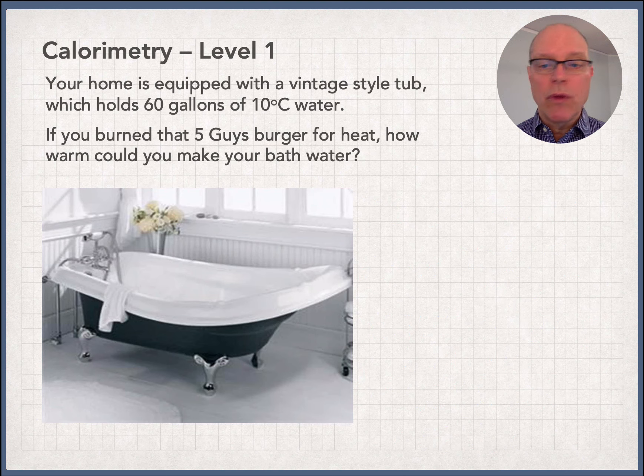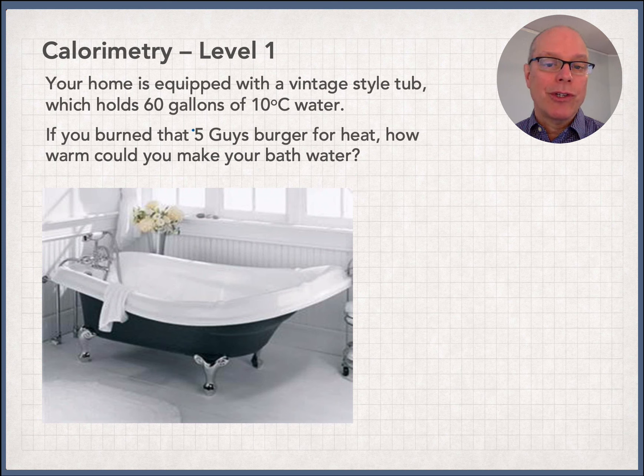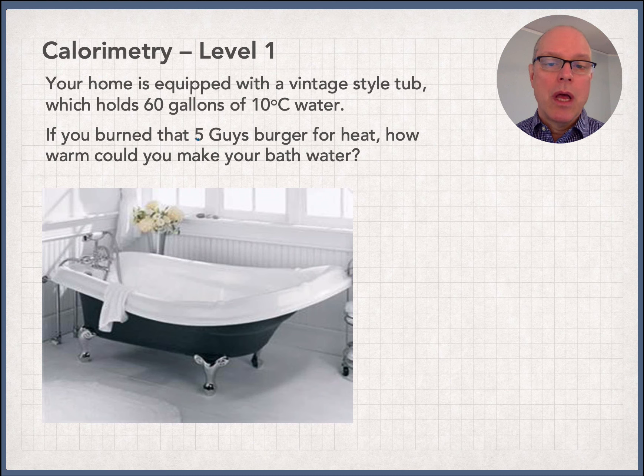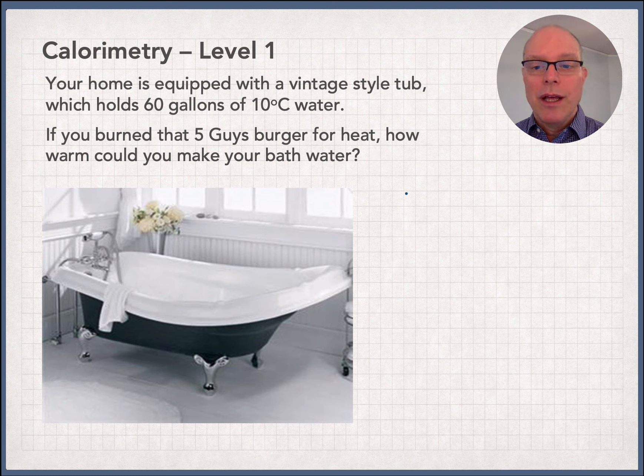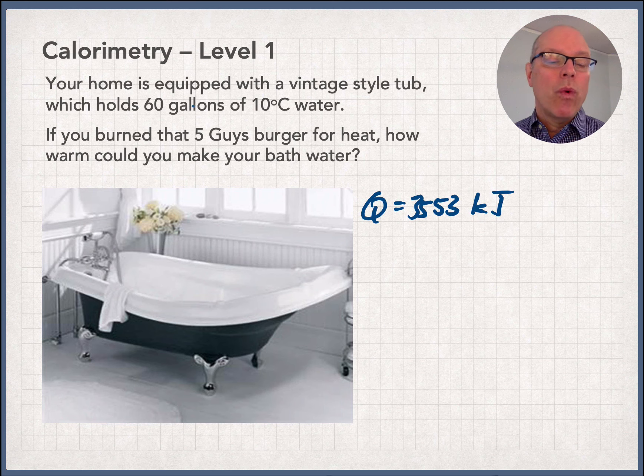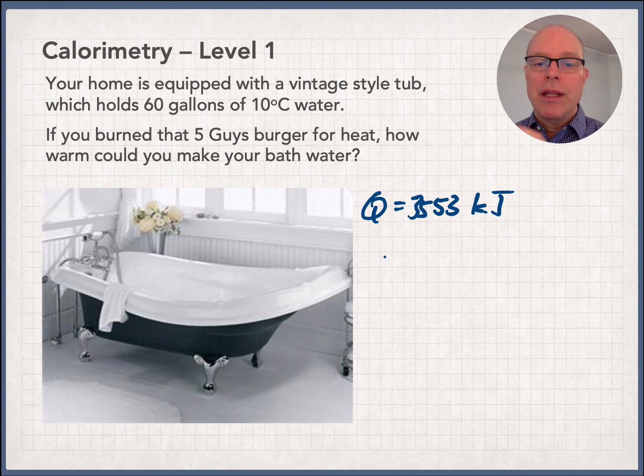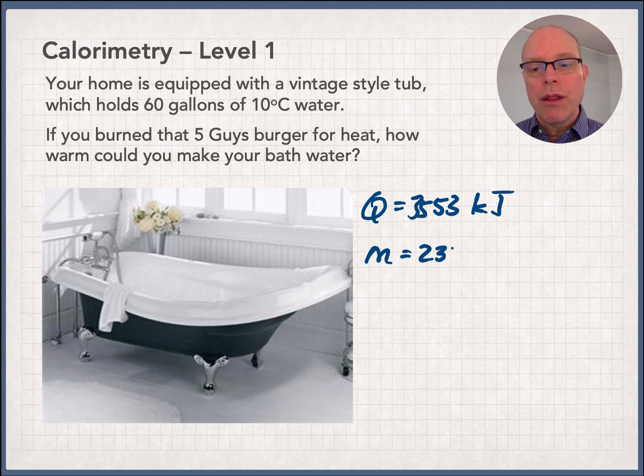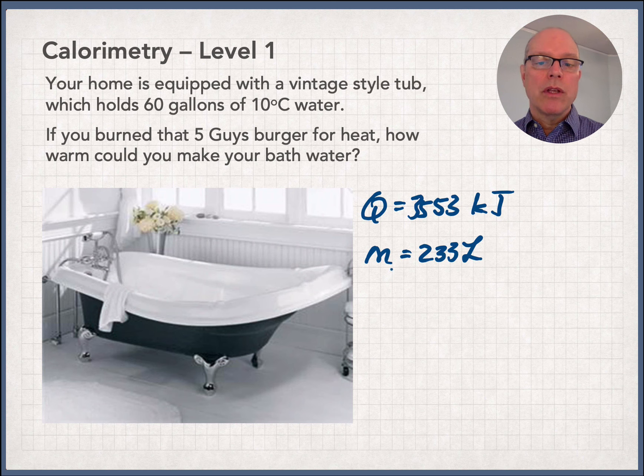Now, the first of these calorimetry examples I call level one because it's really relatively straightforward. I'm going to give you a few facts up front just to make this easy. The premise of the question is just what if instead of eating that Five Guys burger, what if we tried to burn it for heat and warm up our bathtub? Now, believe it or not, if you burned the Five Guys hamburger for heat, you would still get thermal energy equal to 3,553 kilojoules. So that stands. What we need to do is, I'll just give you this for free, a 60 gallon tub is around 233 liters. The density of water is one kilogram per liter. So the mass of our water is 233 liters.